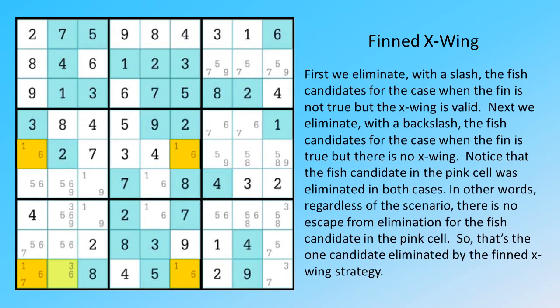First we eliminate, with a slash, the fish candidates for the case when the fin is true but there is no X-Wing. Notice that the fish candidate in the pink cell was eliminated in both cases.